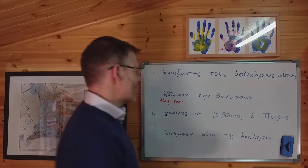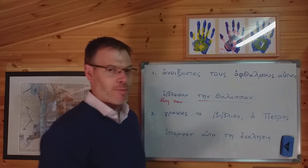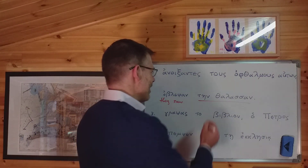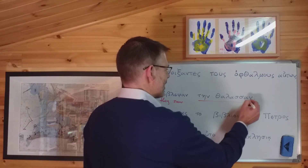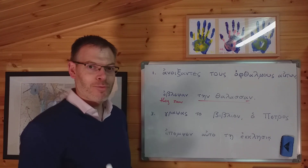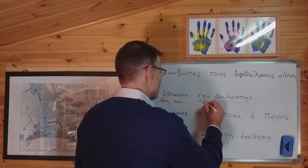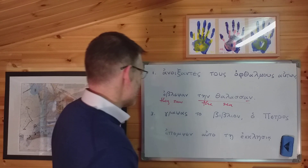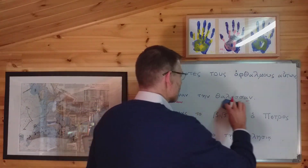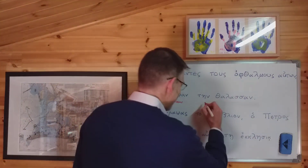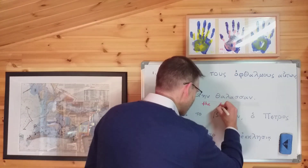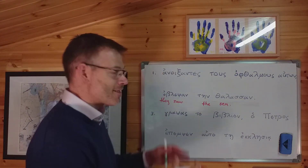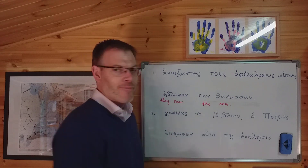And then, predictably, you've got an object in the accusative — τήν θάλασσαν — because people don't just see normally, they see something. That means they saw the sea. I should have a resolution to write legibly. So "they saw the sea" — that's the main clause with the main verb.